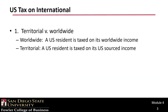Let's start by comparing a territorial tax system to a worldwide tax system. In a worldwide system, the taxpayer is taxed on his, her, or its total worldwide income. For example, the U.S. uses a worldwide income model for individual taxation. If a U.S. citizen moves to Australia for a job, the income they earn in Australia is subject to U.S. income tax.